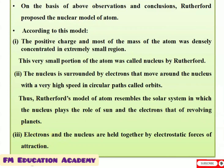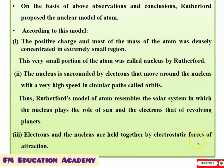Electrons and the nucleus are held together by electrostatic forces of attraction. To summarize: the nucleus occupies a small region; electrons revolve around the nucleus like planets in the solar system; and both electrons and nucleus are held together by strong electrostatic forces of attraction. These were the features of Rutherford's nuclear model of atom.